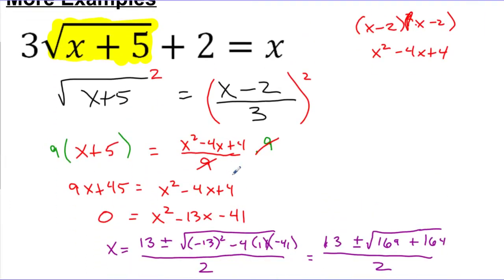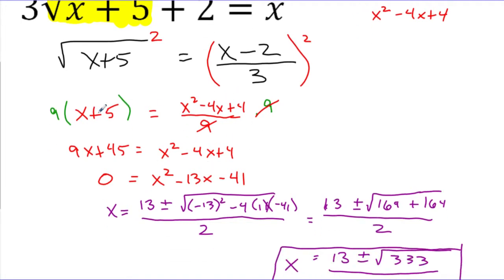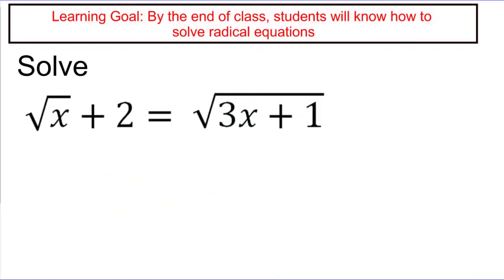You can see I followed the same process: I got my radical alone, then squared it away. It's just that when I squared the right-hand side, I had a messier-looking expression to square, and then had to figure out how to solve the resulting equation. We got rid of the fraction, isolated all expressions to one side, set it equal to zero, and used the quadratic formula to solve. Now let's take a look at one more slightly more advanced radical problem.